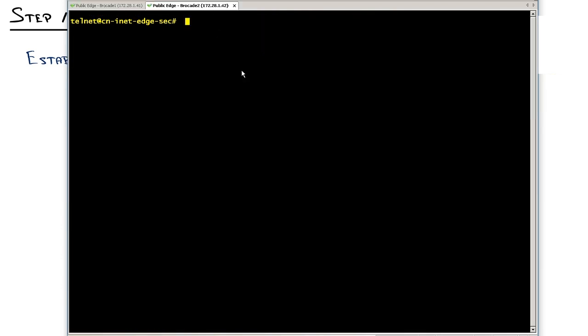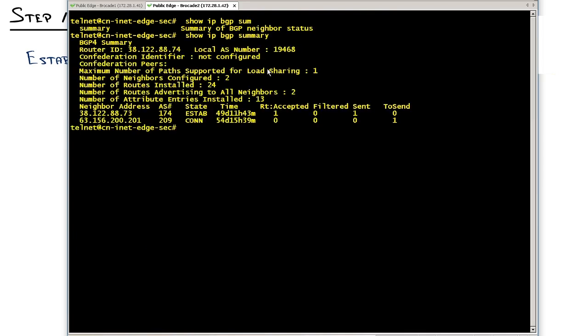Last thing I want to show you is flipping over to Brocade 2. I'll do a show IP BGP summary and just verify that this is, as I was mentioning, exactly the flip configuration. Cogent is established on a secondary router.